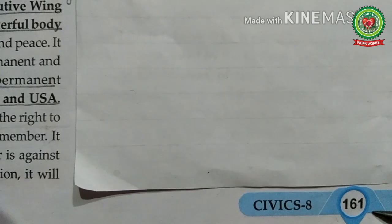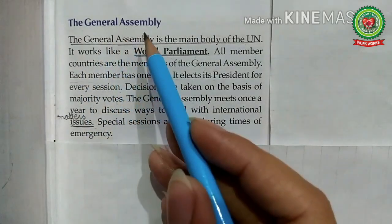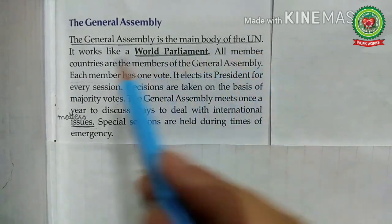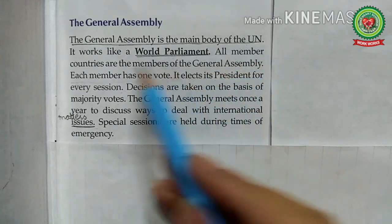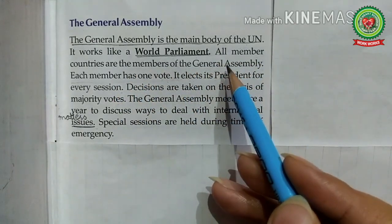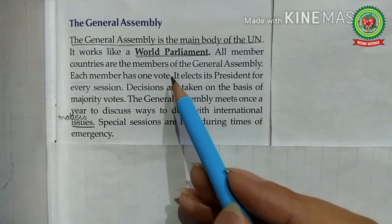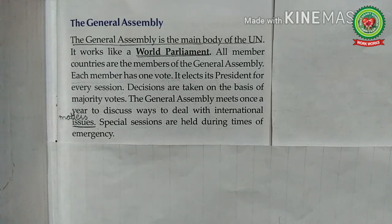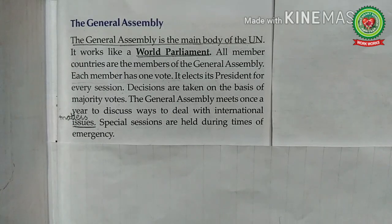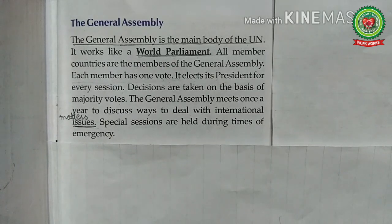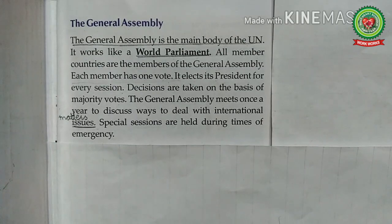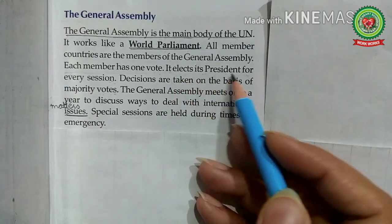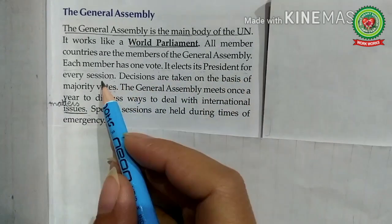Now open page 161 of the book. The General Assembly is the main body of the UN — it works like a world parliament. All member countries are members of the General Assembly. Each member has one vote, so the principle of equality of all nations is applied. The representatives of the member nations attend the meeting, and every member nation can send five representatives or delegates to it, but at the time of voting one nation can cast only one vote.